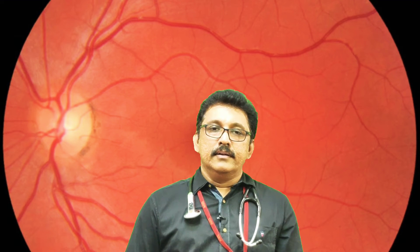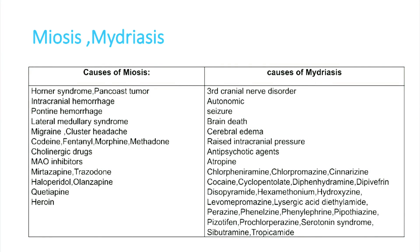If the pupils are not equal, it is called anisocoria. Size, shape, and symmetry are very important. Miosis refers to a small pupil compared to the opposite side or compared to normal. If the pupil is large, it is called mydriasis. There are many causes for both miosis and mydriasis.